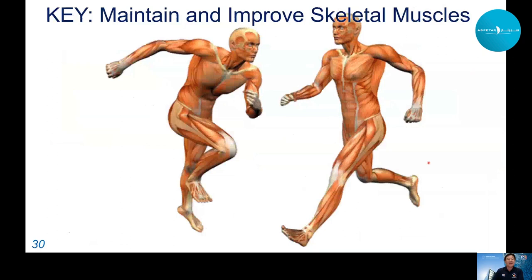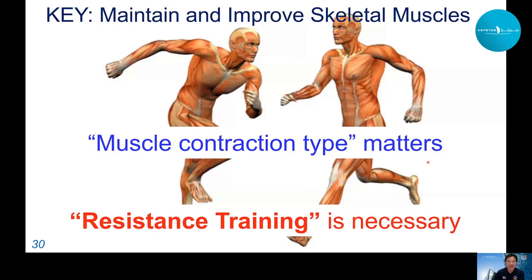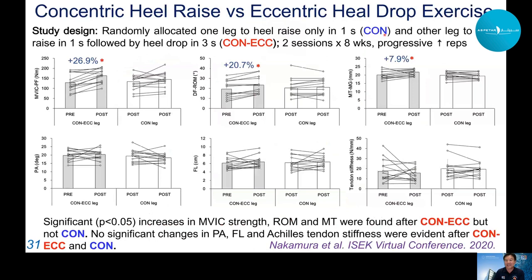Resistance training including eccentric contraction is necessary. In a heel raise study comparing concentric-only versus concentric-and-eccentric contraction, the leg performing both showed increases in strength, range of motion, and gastrocnemius muscle thickness, while these did not occur for the concentric-only leg. This suggests including eccentric contraction is very important for improving muscle function and muscle mass.